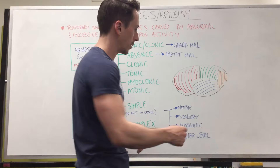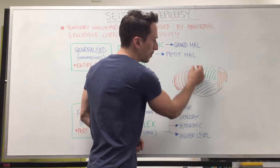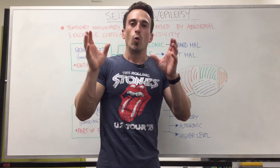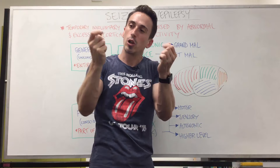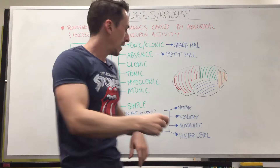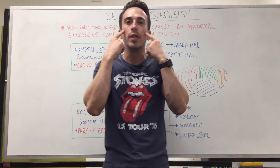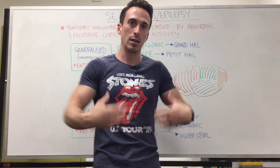What about motor seizures? Our motor cortex is located in the frontal lobe, and we have a map of the entire body there — hands, face, arms, trunk, legs, and so forth. The area with the most fine motor movement has the largest part of the brain dedicated to it, including the hands and the face, which are also located next to each other. So the most common presentation of a focal motor seizure is movement of the hands and face; it's very rare for focal motor seizures to involve trunk and limb movements.